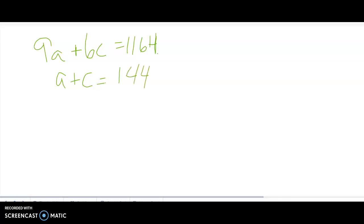I'm going to show you the other way. So I know I want to eliminate either a or c, so here I'm going to multiply by negative 6. Which means I have negative 6a minus 6c equals negative 864. So now basically we can combine these equations.